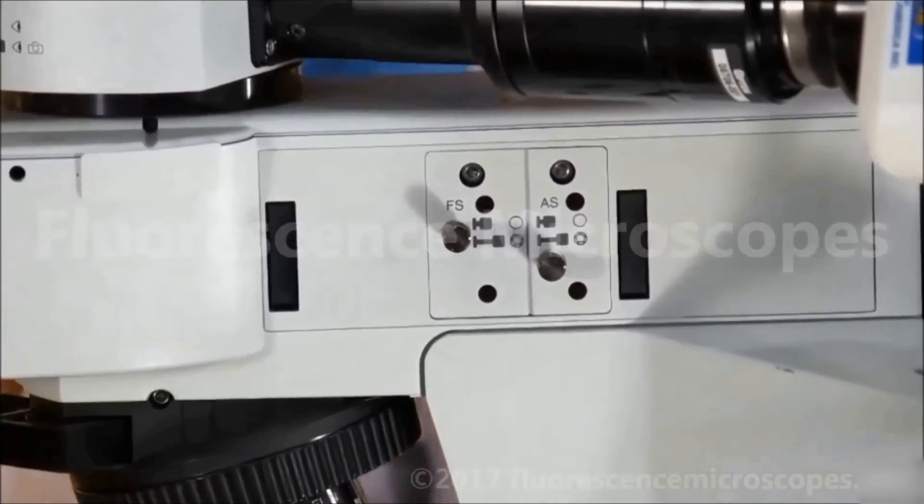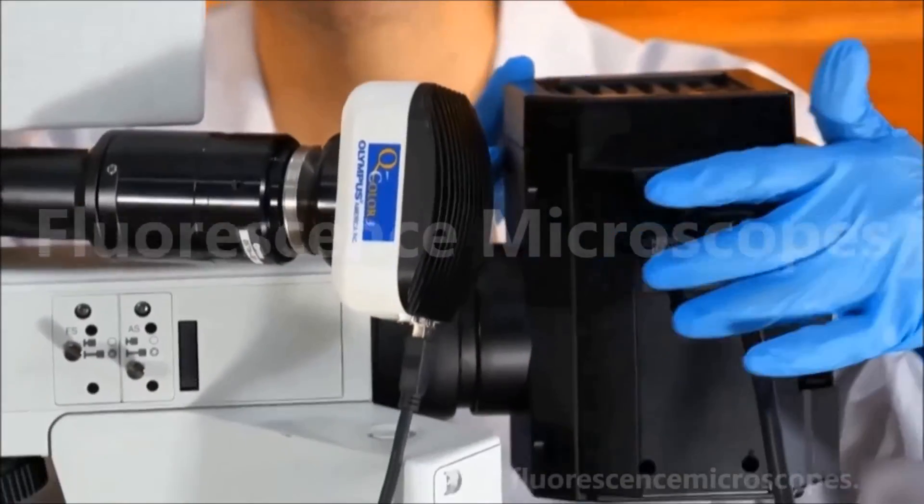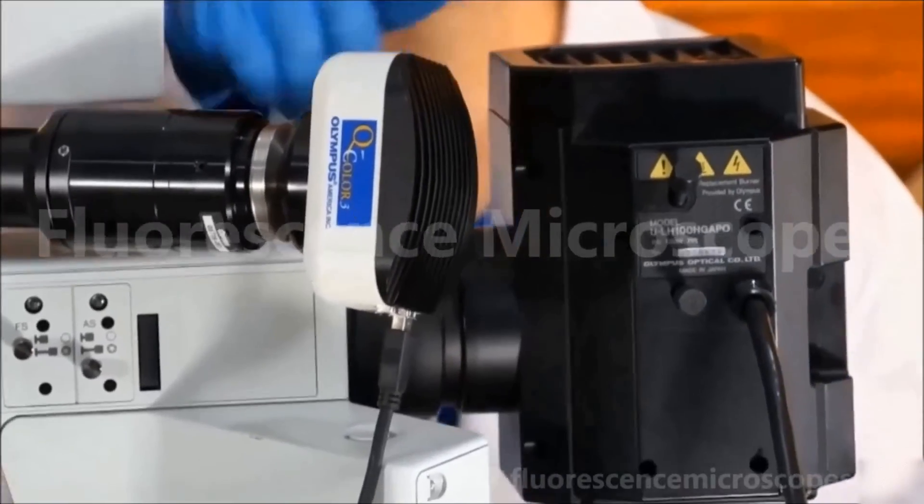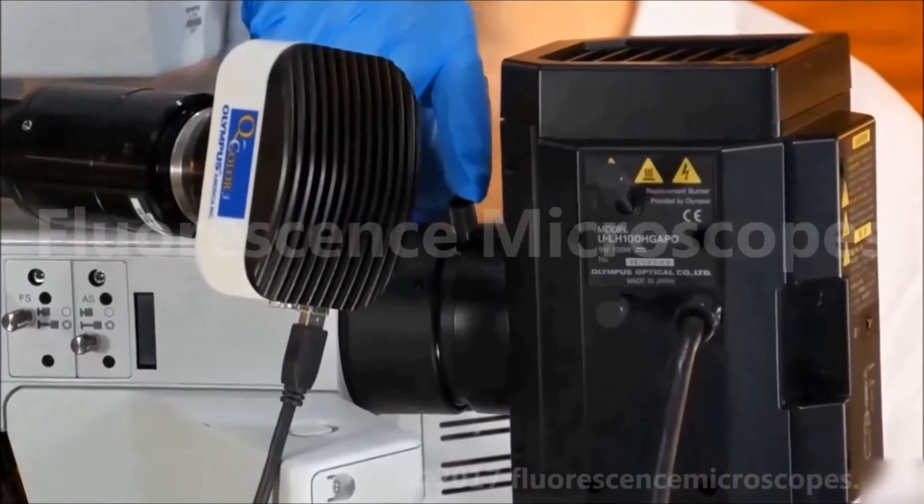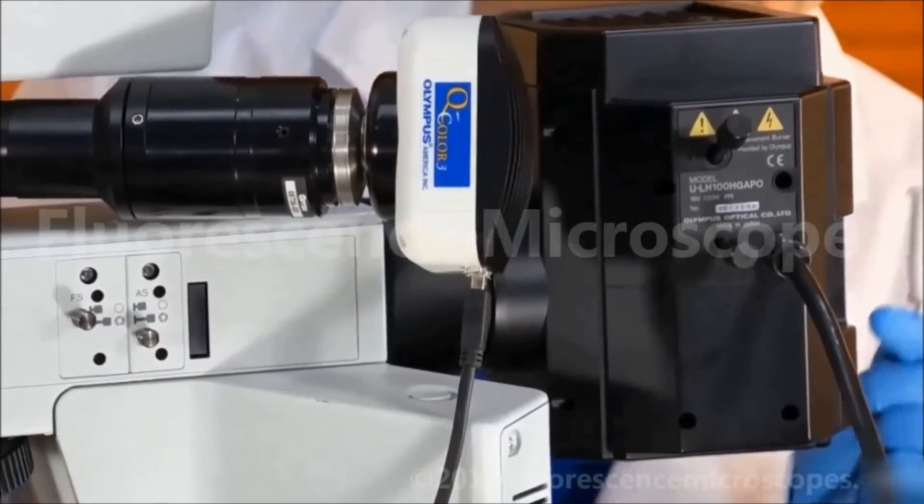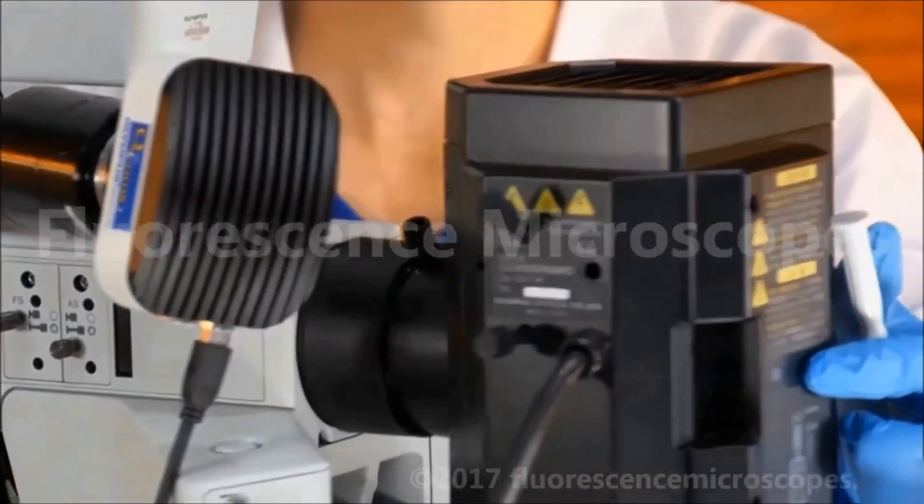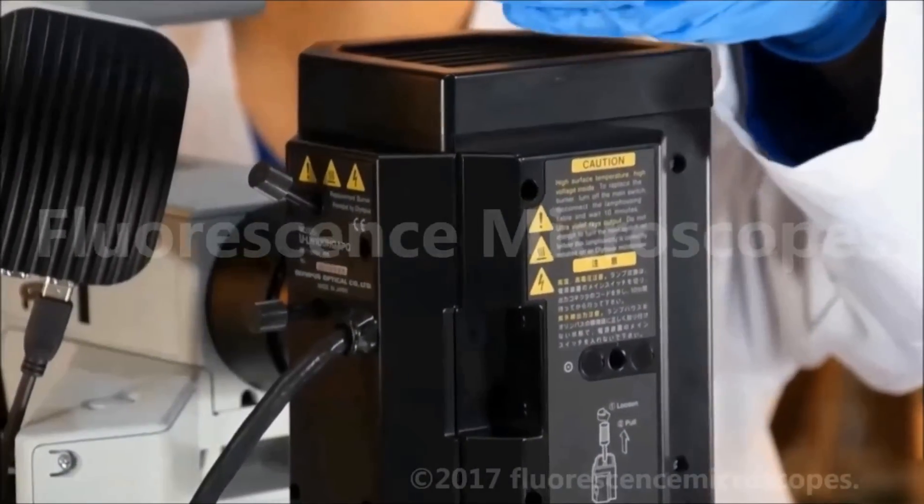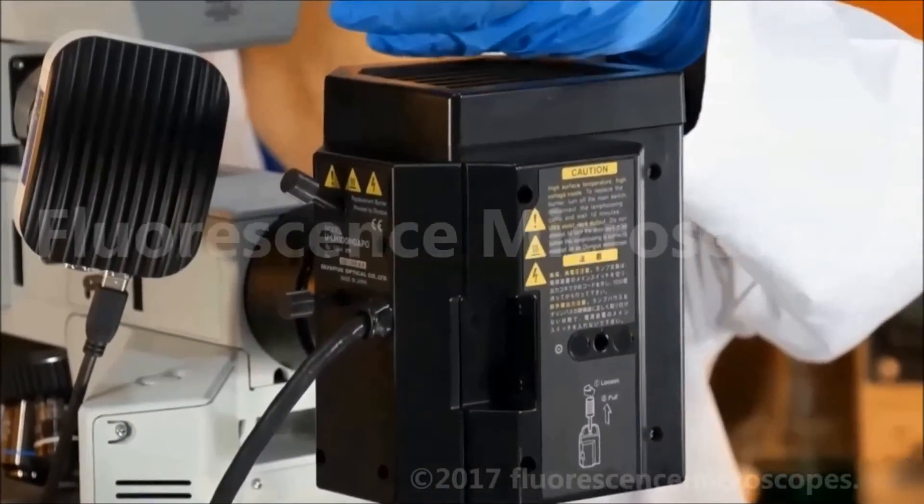You have on your HBO lamp housing, you have two knobs for centering your bulb. Plus you have a collector knob and a collector focusing knob. There is one additional knob, if need be, at the very back of this lamp housing. It moves the reflector in and out.